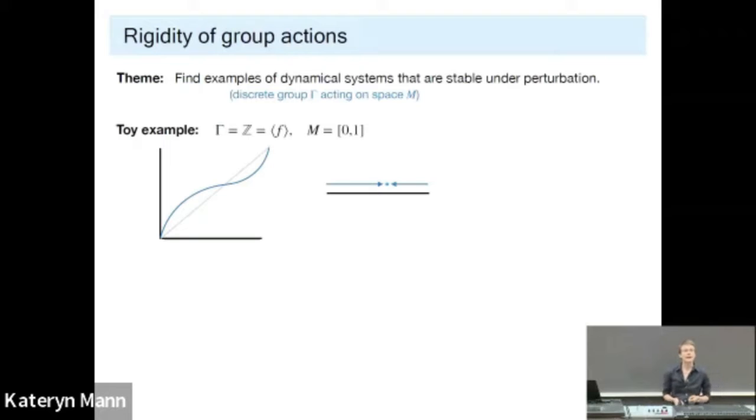So here's an example. On the left, I've drawn the graph of a function, a homeomorphism of the interval, and on the right, a more suggestive dynamical picture, which tells you behavior of points under iteration. I have a single fixed point and other points get attracted towards this as I iterate. Now, if I take a C1 perturbation, meaning that I take a homeomorphism that's pointwise close with derivatives also close to the original, I will see qualitatively the same behavior.